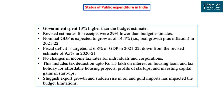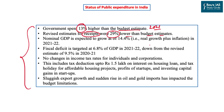Looking at the current status of public expenditure: the government has already spent 13% higher than the budget estimate in 2021. On the other hand, receipts are 29% lower than the budget estimate. So if the government was hypothetically at zero previously, they have increased spending by 13% and reduced revenues by 29%, creating a gap of 42% to GDP — a matter of concern.